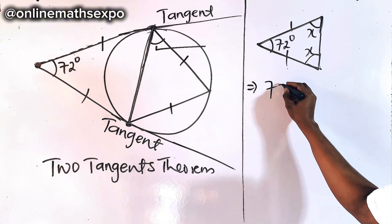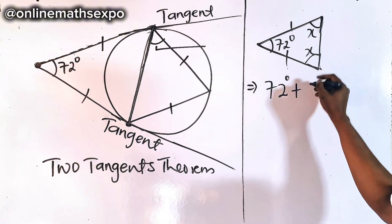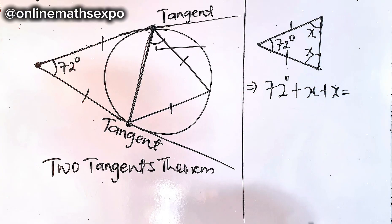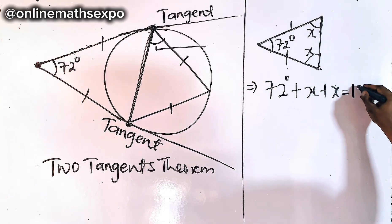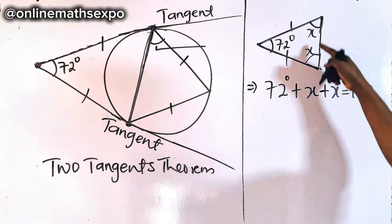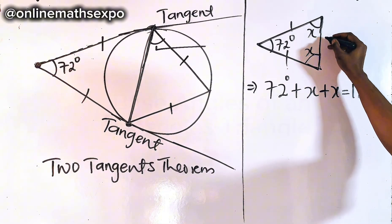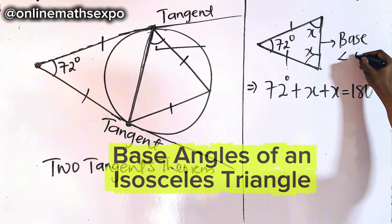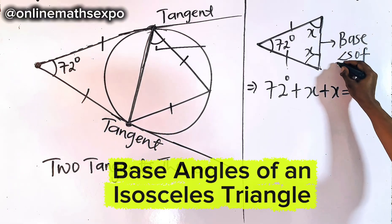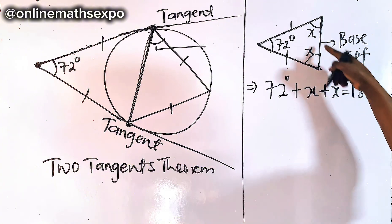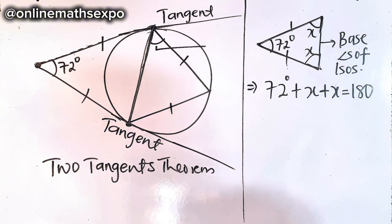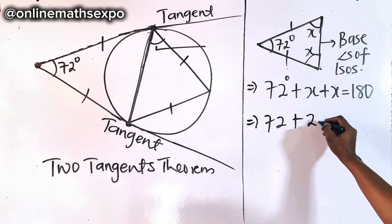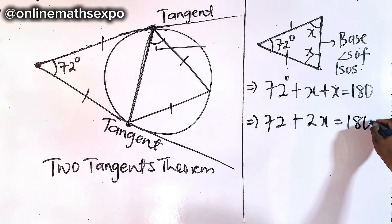Let's find the missing angle. So to do that, we have 72 degrees add x add x should equal the total angles of the triangle, which is 180 degrees. Remember, this is x and x because the base angles of isosceles triangles are equal. So this gives us 72 add 2x equals 180 degrees.